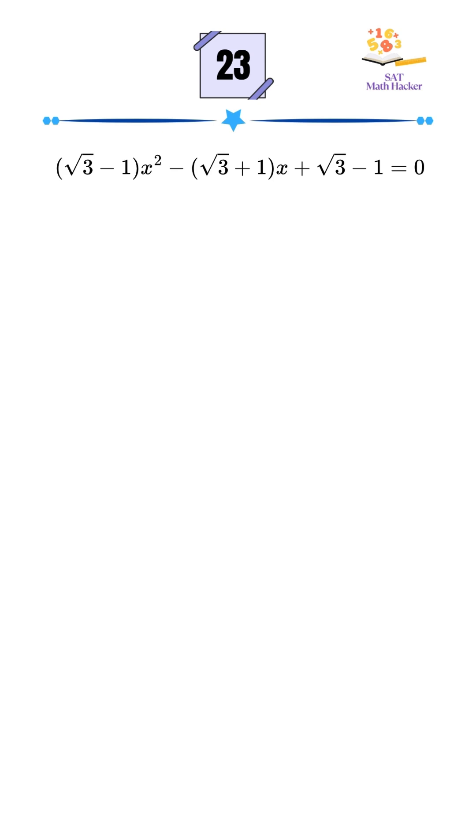In this quadratic the value of a is square root of 3 minus 1, b is negative square root of 3 plus 1, and c is square root of 3 minus 1.